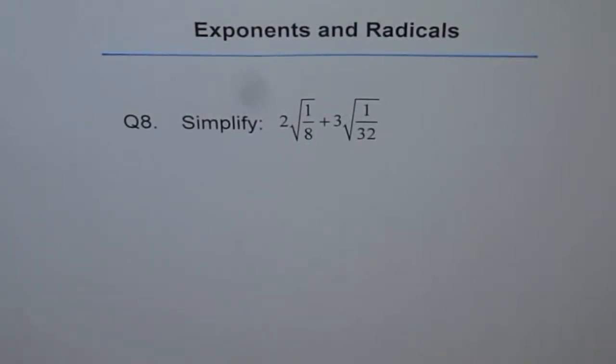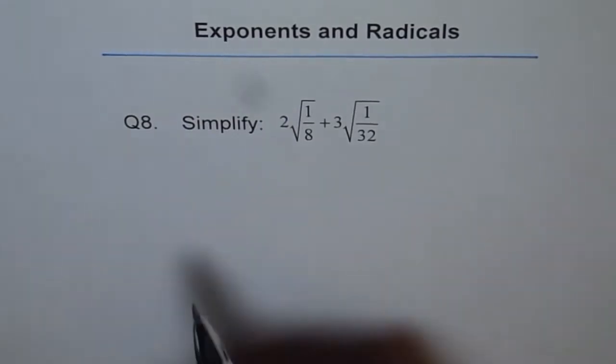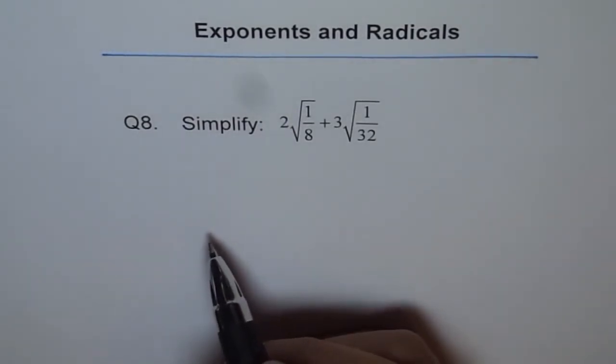Exponents and Radicals, Question 8. Simplify 2√(1/8) + 3√(1/32).